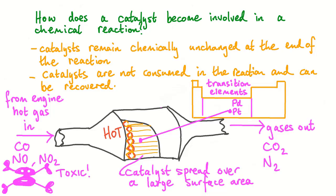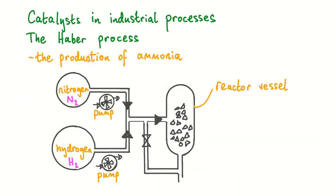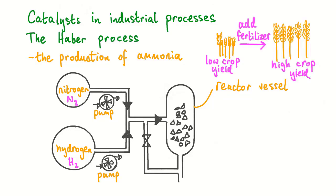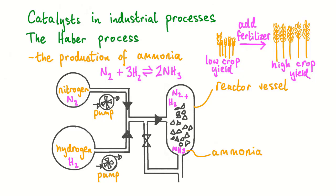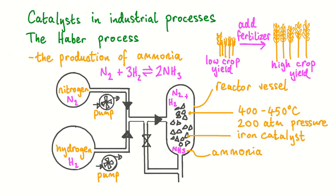Although some common industrial catalysts contain precious metals, many catalysts contain more common metals and are relatively cheap. In the Haber process, ammonia is produced. Ammonia is an important starting material for fertilisers, which help to improve crop yields. In the Haber process, nitrogen gas is reacted with hydrogen gas. Nitrogen and hydrogen do not normally react with one another unless high temperature and very high pressures are used. Iron is used as a catalyst to lower the activation energy and allow the reaction to proceed at lower temperatures with a reasonable rate of reaction.